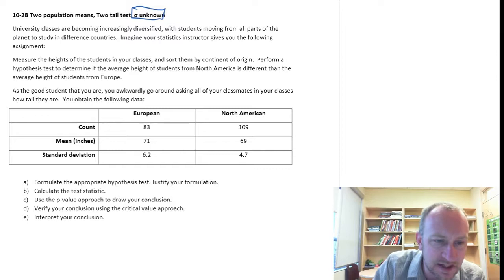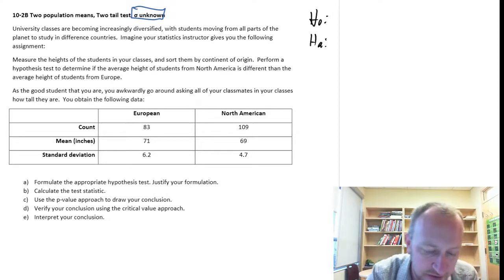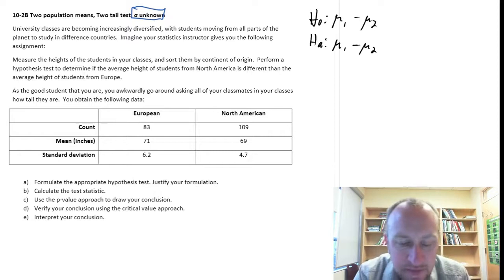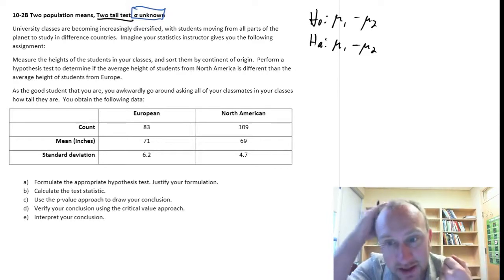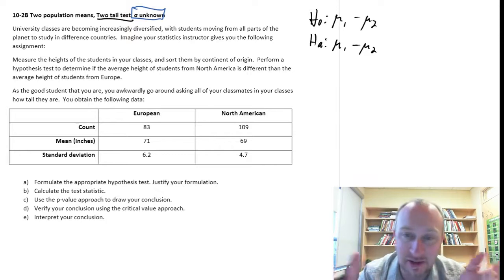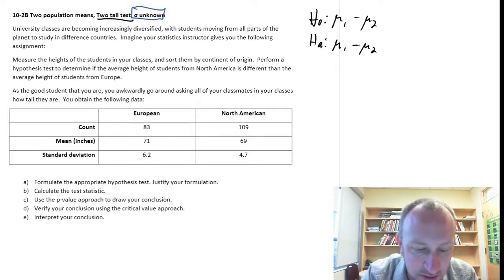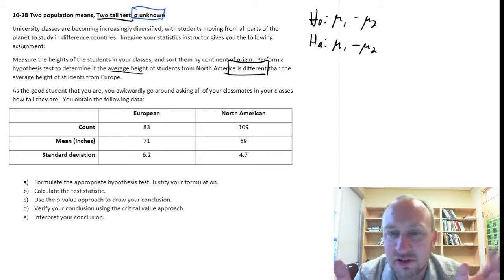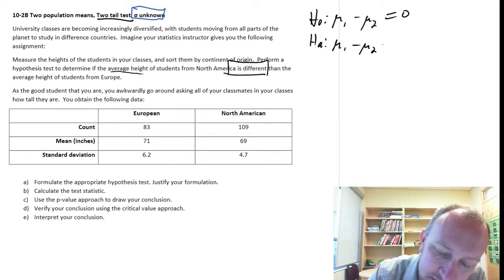Formulate the test, justify the test, same general procedure. The first step is to put together the null and alternative hypotheses. This is a two population case, so mu1 mu2. And it does tell us that we're doing a two-tail test. If that information wasn't there, we would have to look for clues in the problem. The clue here is 'perform a test to determine if the average height is different.' There's our keyword right there. We're just looking to see if there's a difference, not if one is larger. So this is going to be a two-tail test.